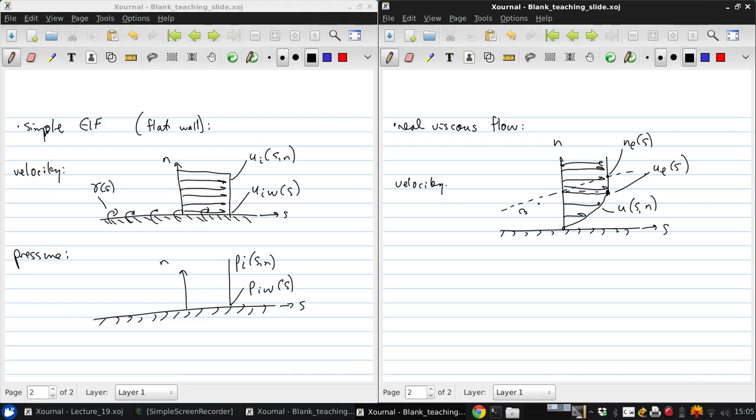And then the vorticity, instead of being confined to a sheet, is omega of S and N, all through the boundary layer.